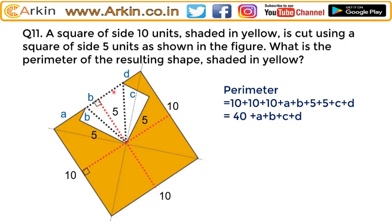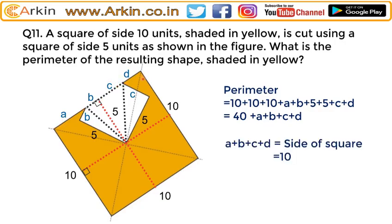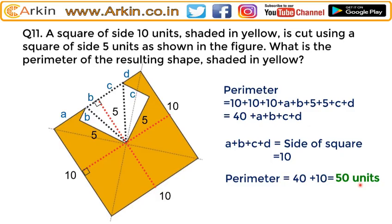Similarly, in these two triangles, both are congruent because each has 90 degrees, the hypotenuse is common, and one side is 5 units. So C and D follow the same logic. The whole length A plus B plus C plus D is a side of the square, that is 10 units. The perimeter is 40 plus A plus C plus D, so the perimeter equals 40 plus 10 = 50 units.